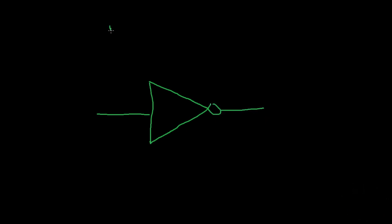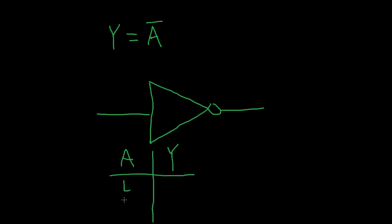When you look at a CMOS inverter, it looks incredibly simple and it's fairly easy to describe. A lot of people would write the description as an equation y equals a bar. You could also write it as a table with the input a and the output y, just writing these as low/high and high/low. You can do this with essentially any logic gate. However, the complicated questions start to come up whenever people wonder what exactly does this L mean, what voltage is supposed to be on this input, how much current is flowing into or out of the device, and when I connect this up to a load, what exactly is going to happen?